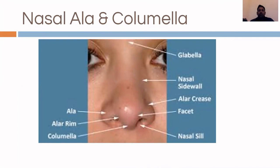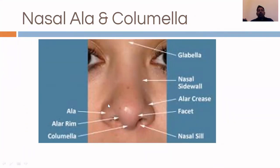There are a few more terms to understand before proceeding with rhinoplasty. The side wall of the nose and the ala of the nose — the ala refers to the inferior lateral portion of the nose.